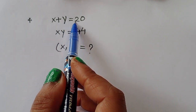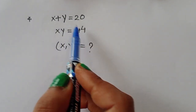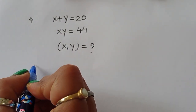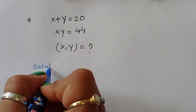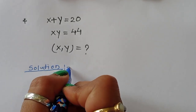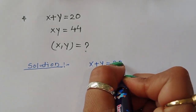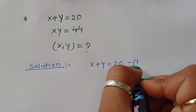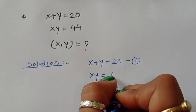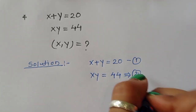The question is given: x plus y is equal to 20, and xy is equal to 44. We have to find out the value of x and y. Let's see the solution. This is equation number 1: x plus y equals 20. This is equation number 2: xy equals 44.